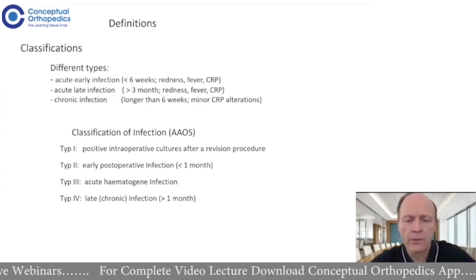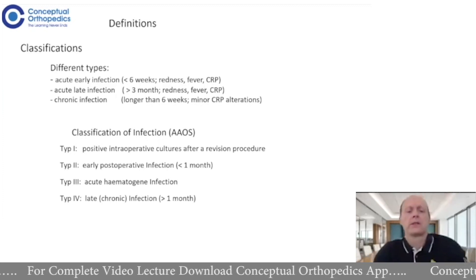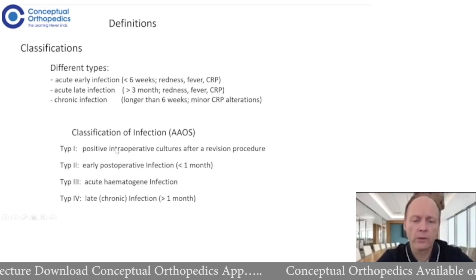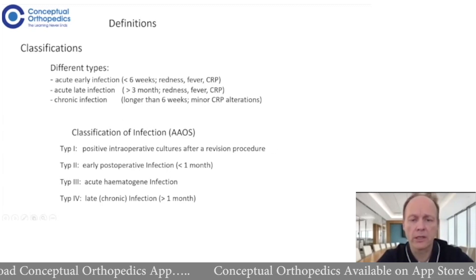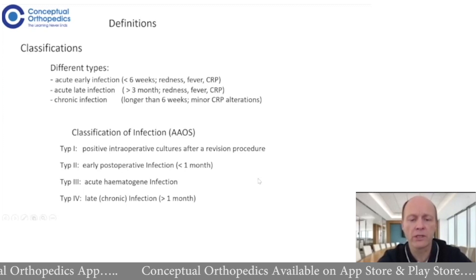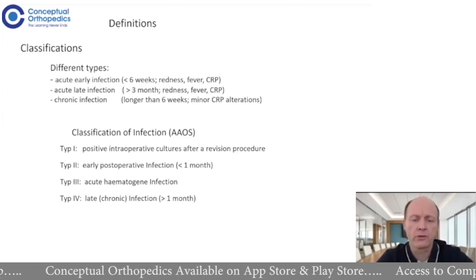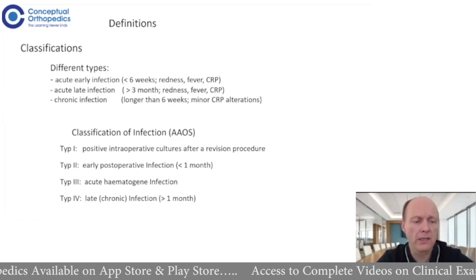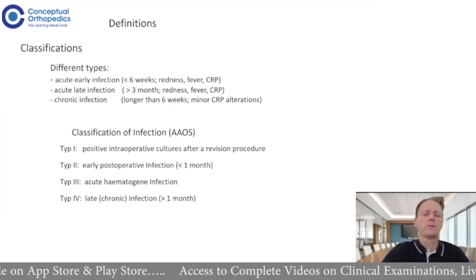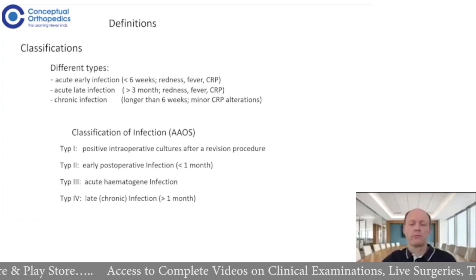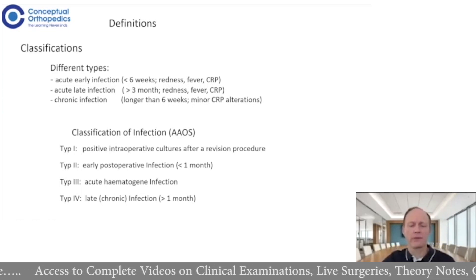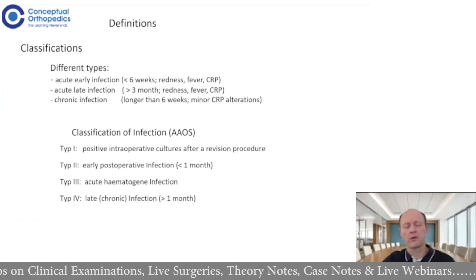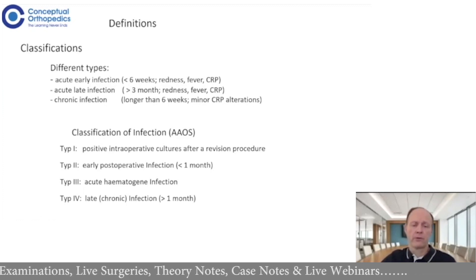This classification is from the American Association, and it is quite similar. Type 1 is a positive intraoperative culture after a revision procedure — these are misdiagnosed or chronic infected cases that became obvious during revision. Type 2 is an acute early infection, type 3 is the acute late or hematogenous infection, and type 4 is the chronic infection.